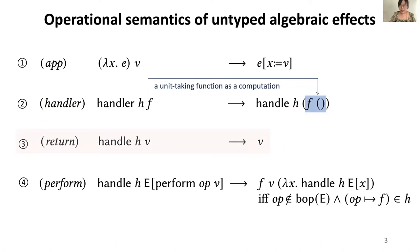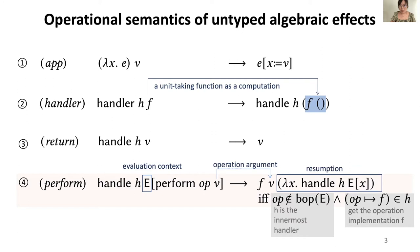When handling a computation, there are two possible situations. In the first case, the computation evaluates to a value, so we remove the handle and propagate the value. In the second case, the computation performs an operation which is handled by a handler. Several things to note here. First, this capital E represents an evaluation context, which essentially represents a call stack. That means we can perform an operation deep inside the call stack. Then, how do we know which handler is used to handle this operation? We will need to search through the evaluation context and find the innermost handler that can handle this operation. And we get the operation implementation f. Now we are ready to apply f to the operation argument v as well as a resumption, which captures the whole evaluation context between handle and the operation call.